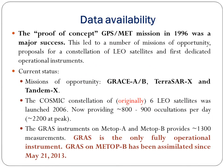Regarding data availability, the proof of concept GPS/MET mission in 1996 was a major success, leading to missions of opportunity, proposals for LEO satellite constellations, and the first dedicated operational instruments. Current missions of opportunity include GRACE A/B, TerraSAR-X, and TanDEM-X. The COSMIC constellation of 6 LEO satellites was launched in 2006, providing approximately 800 to 900 occultations per day, peaking at 2200. The GRAS instruments on METOP-A and METOP-B provide approximately 1300 measurements per day, and GRAS is the only fully operational instrument, with GRAS on METOP-B assimilated since May 21, 2013.